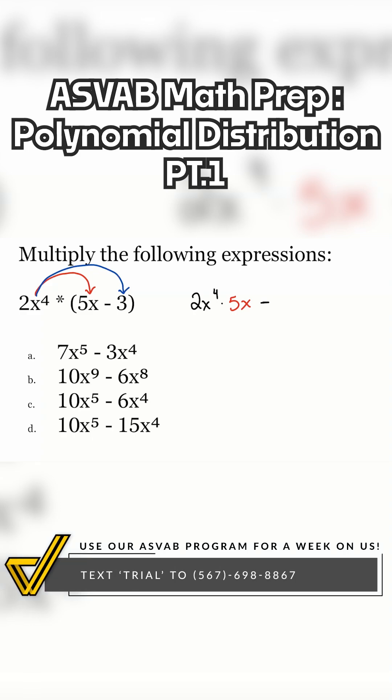And then from there, we have 2x to the power of 4 multiplied by that 3. Notice I'm not going to write negative 3 because I already thought about the sign right here. So be very careful about that. But nonetheless, we have the 3 there at the end.